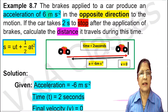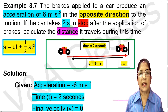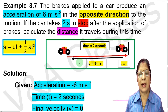The question is: the brakes applied to a car produce an acceleration of 6 meter per second square in the opposite direction to the motion. If the car takes 2 seconds to stop after the application of brakes, calculate the distance it travels during this time. The meaning is that the car is running and brakes are applied, producing an acceleration of 6 meter per second square in the opposite direction.